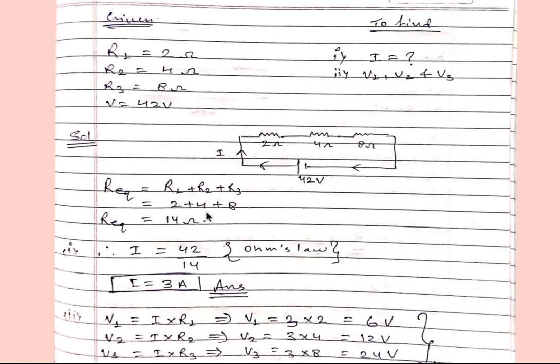So R equivalent equals R1 plus R2 plus R3. From here we will get R equivalent equals 14 ohm. Then current I equals V divided by R, then I will be 3 ampere. This is our first answer.